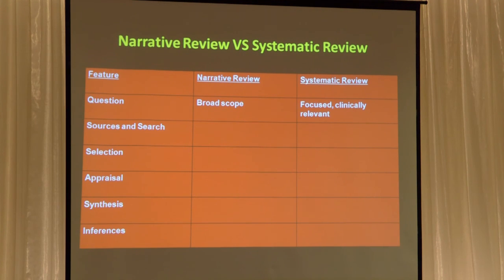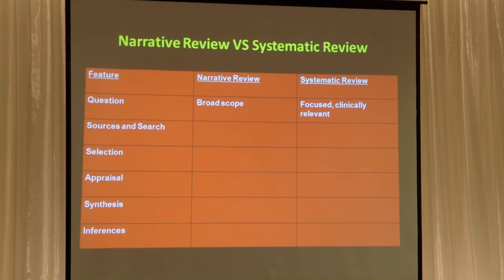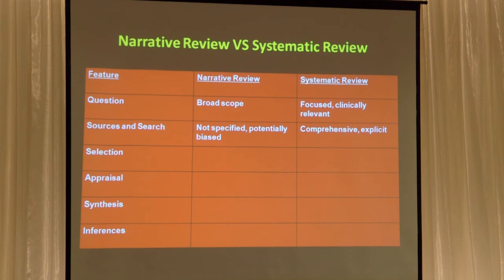PICO versus focused is how they differ from a narrative review. For example, you might have a question like: does prophylactic anticonvulsant medication prevent first seizures in patients with subarachnoid hemorrhages or after craniotomy? That's a very focused question for a systematic review. You might see a chapter on anticonvulsant management in the neurosurgery patient — a broad question versus a focused question. As for sources and search for evidence: in a narrative review they don't generally tell you how they selected the articles, but it's very comprehensive and explicit in a systematic review.